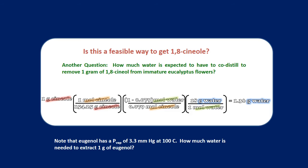So this is actually a very feasible way to get cineole or eucalyptol from the eucalyptus plant. Now note that the eugenol that we're going to attempt to steam distill in our lab this week only has a vapor pressure of about 3.3 millimeters mercury or 3.3 torr. So you should calculate for yourself exactly how much water will it take to remove an entire gram of eugenol, which is approximately the amount that we'd like to obtain.